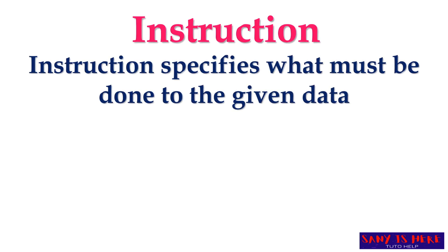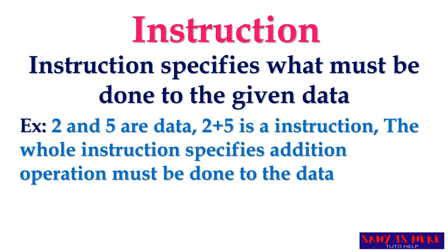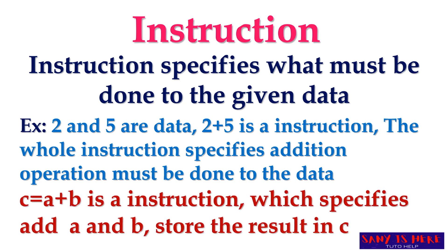Let us see what is an instruction. An instruction specifies what must be done to the data. For example, 2 plus 5 — this instruction specifies that the addition operation must be done on the given data. Another example: C is equal to A plus B — it specifies to add A and B and store the result in C. You must know how to write instructions in a computer.